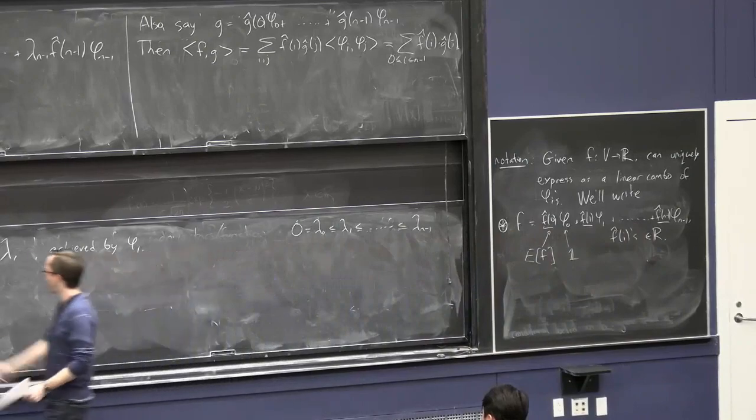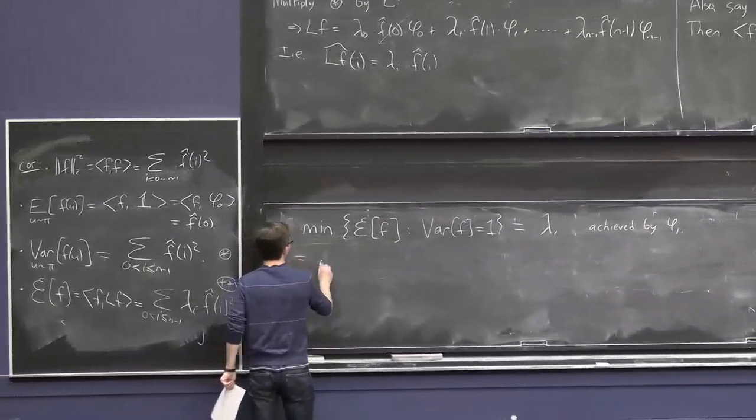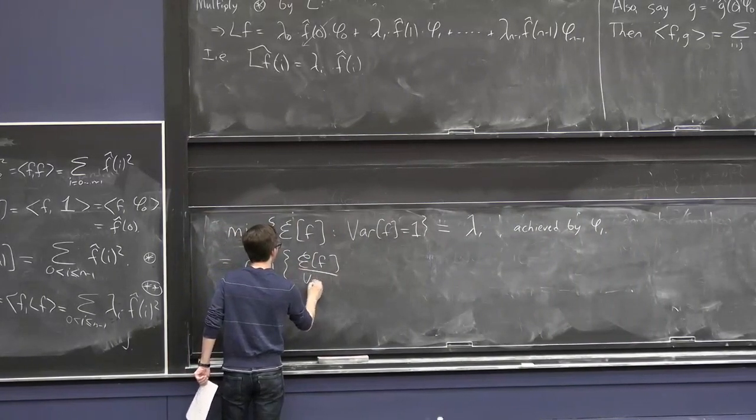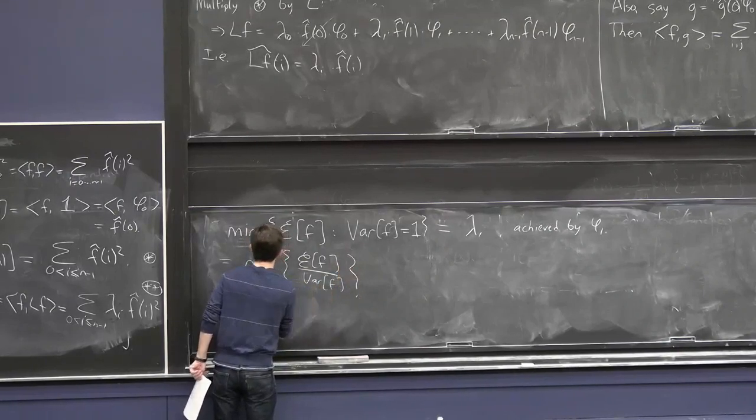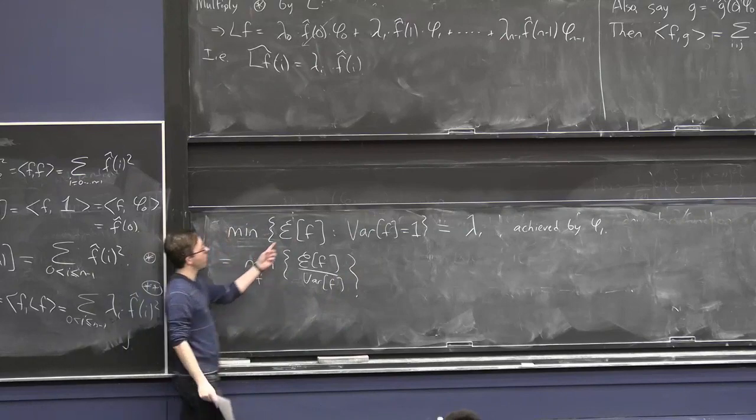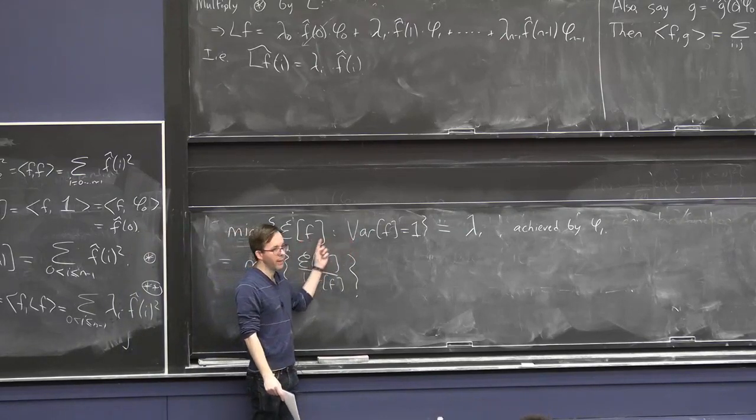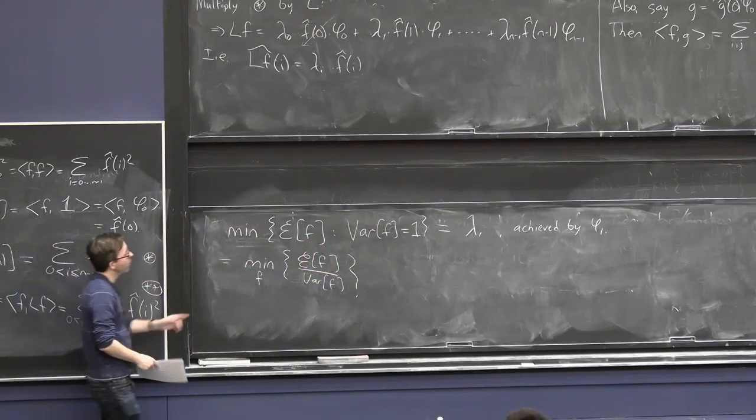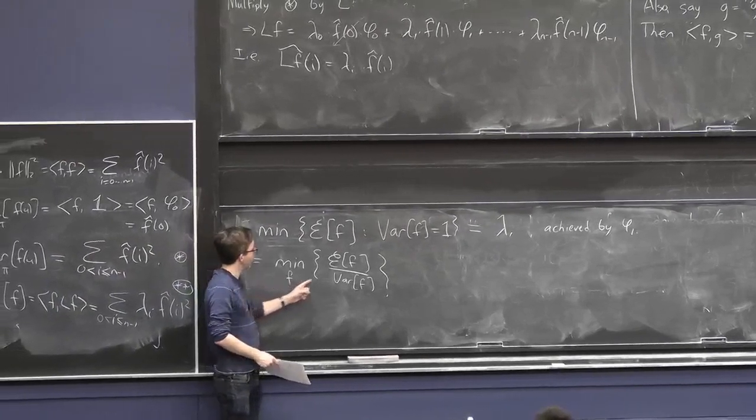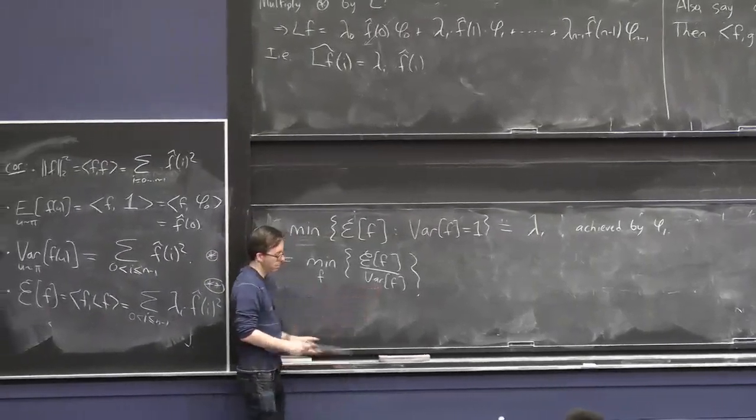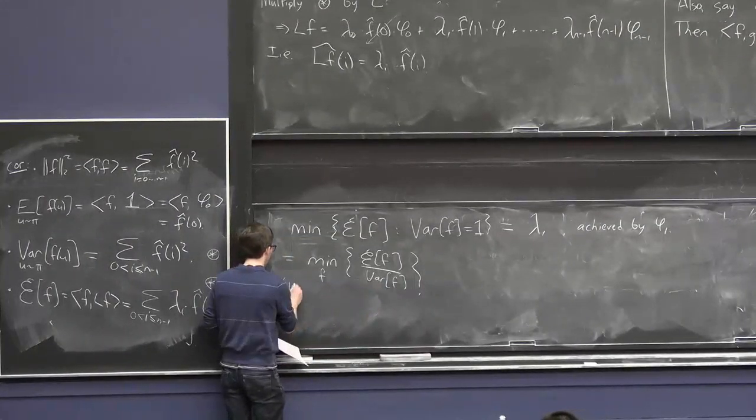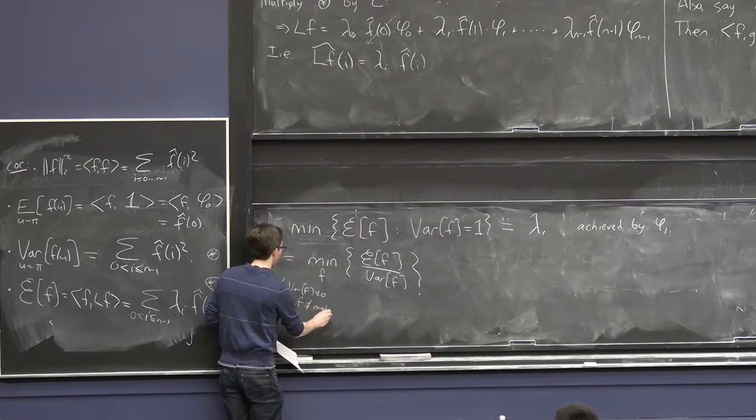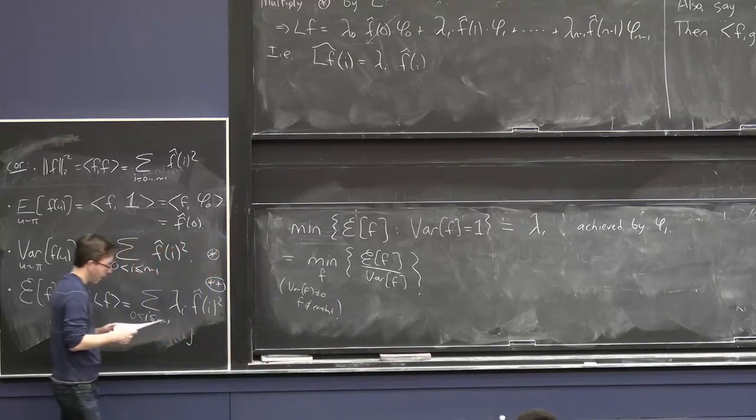And I also want to remind you that this minimization is the same as this minimization. Minimize the ratio over all f. OK, because these quantities both have the property that if you multiply them by a constant, they go up by the square of that constant. OK, if you want to be picky, you should probably minimize over f where the variance is not 0. So, maybe variance of f is not 0, or f is not a constant function.